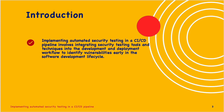Implementing automated security testing in a CI/CD pipeline involves integrating security testing tools and techniques into the development and deployment workflow to identify vulnerabilities early in the software development lifecycle. Security plays a critical role in the CI/CD pipeline — automating the build, test and deployment of code ensures that code changes are reliable for production environment deployment. To maintain robust security, it is essential to have automated security testing tools integrated into the CI/CD pipeline to run automated security scans against the checked-in code.